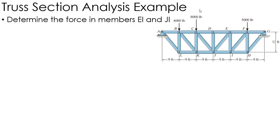In this problem, we want to determine the force in members EI and JI, which are right here in the middle of the truss. The best way to approach this is using the method of sections.